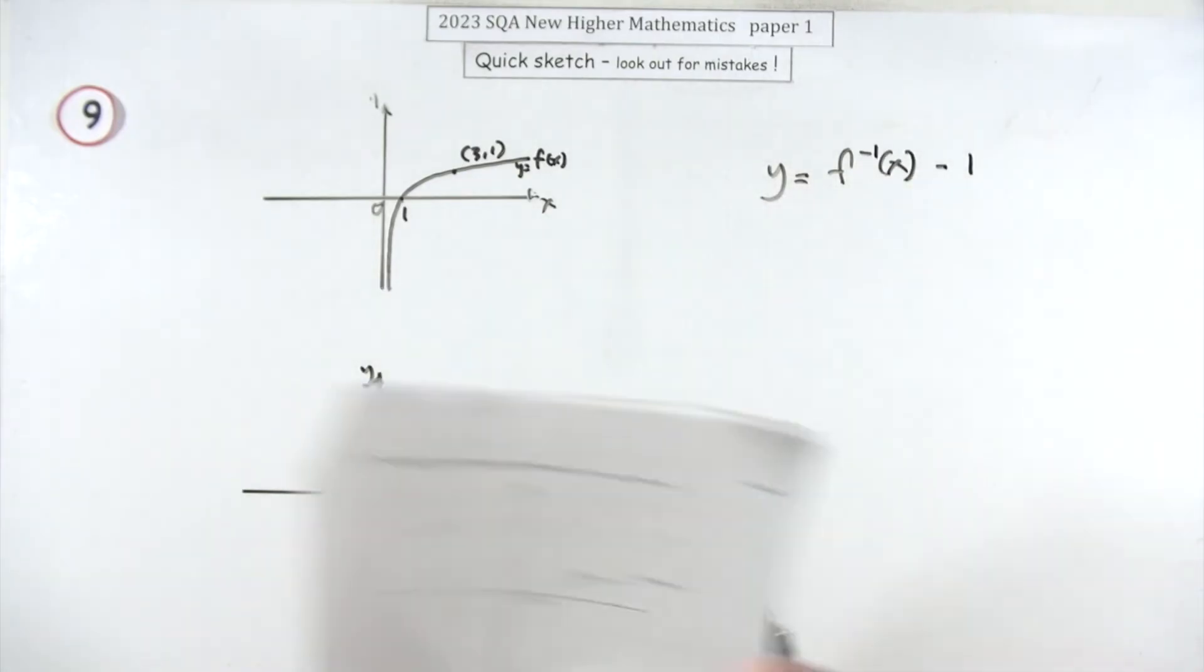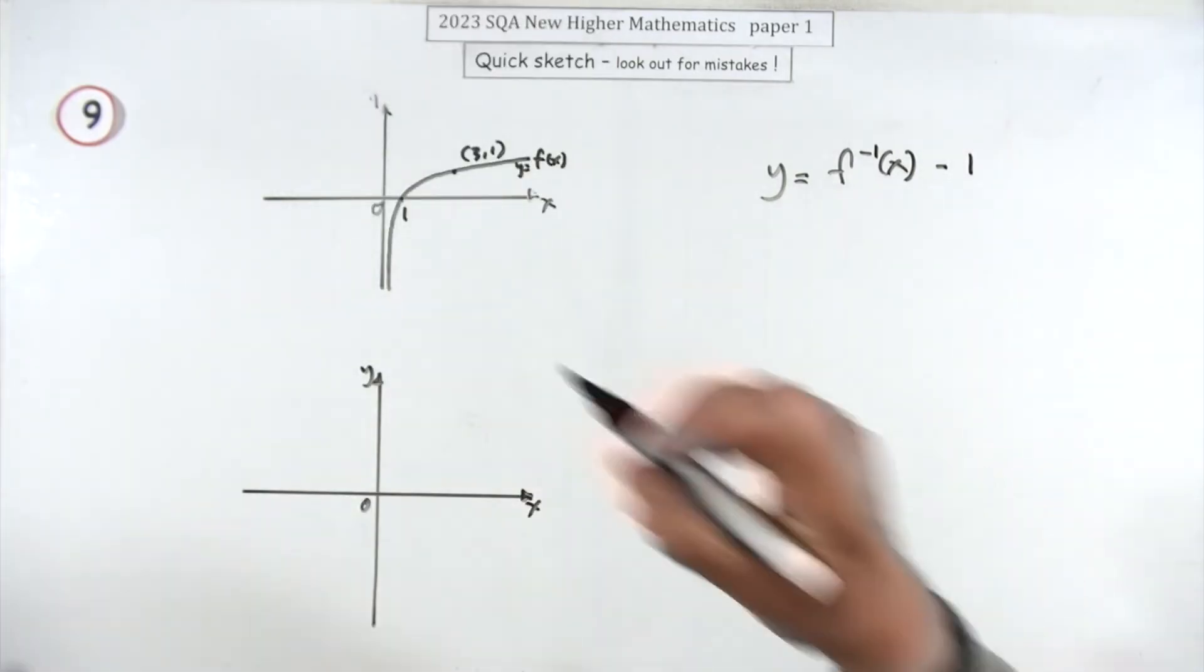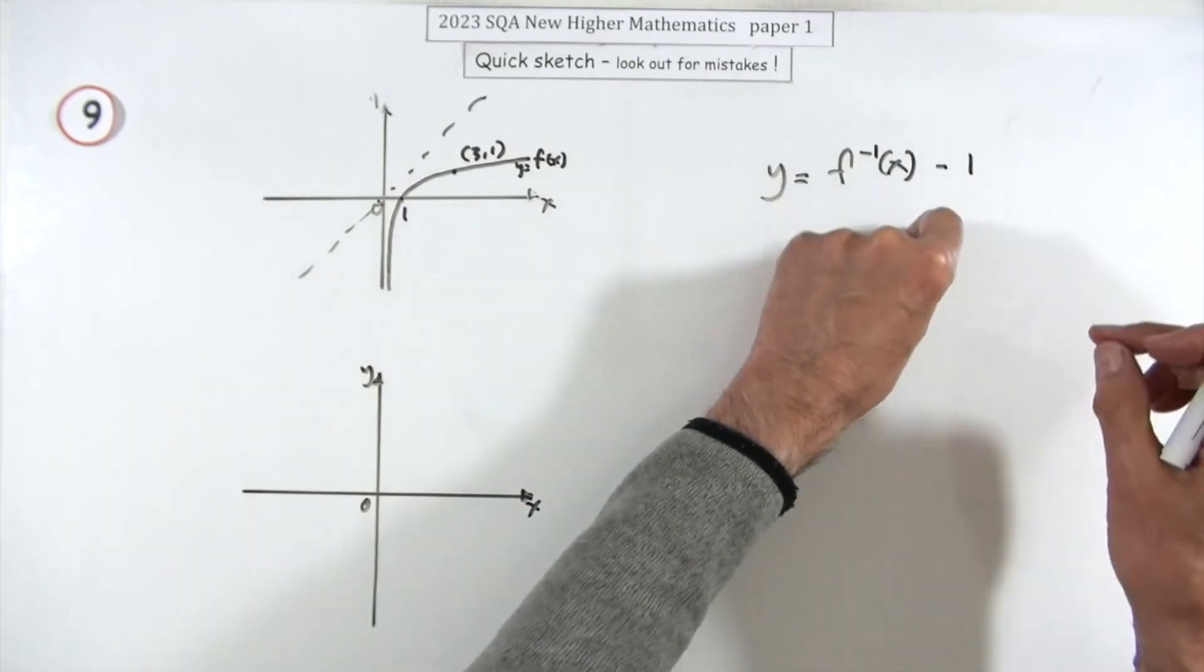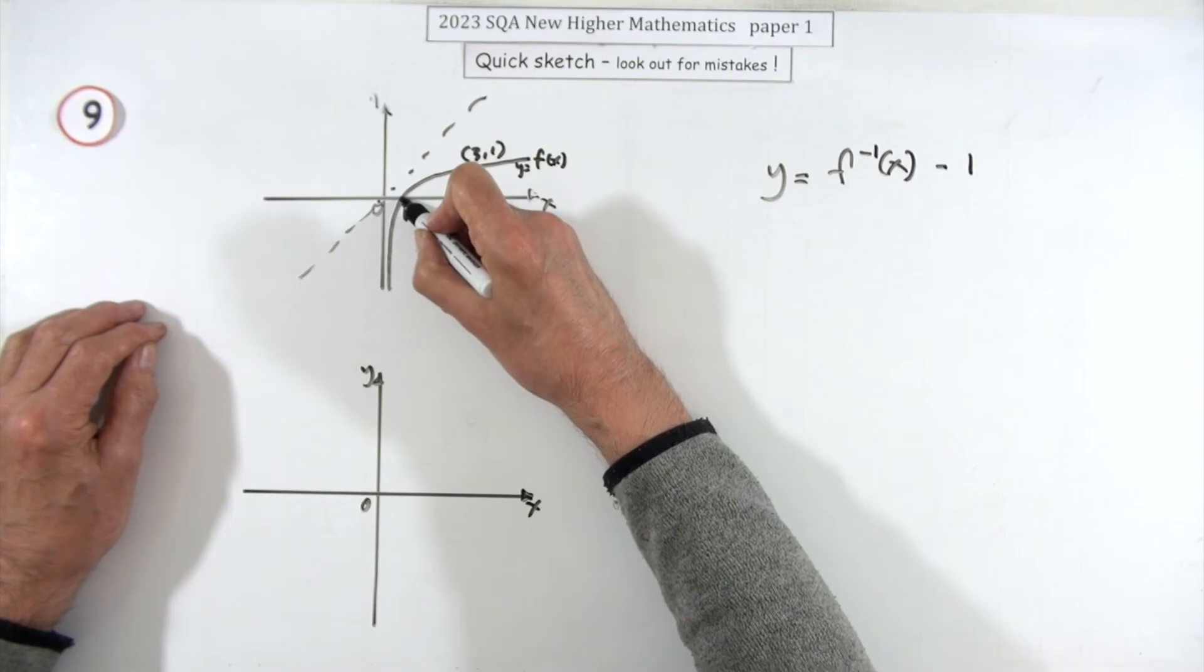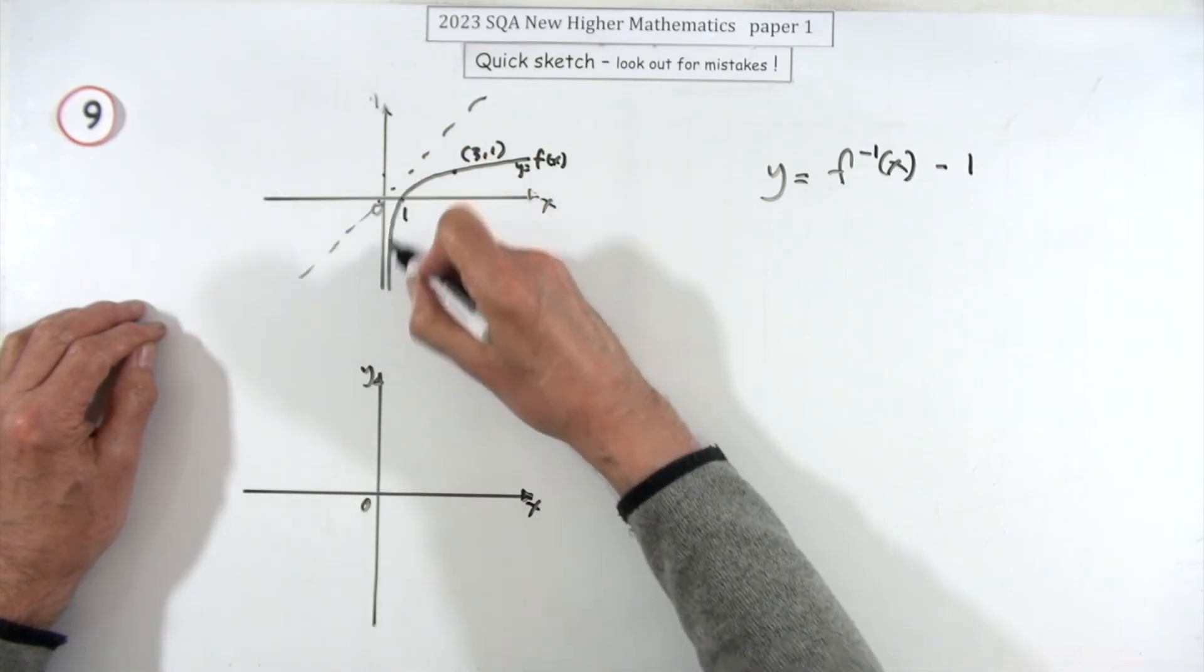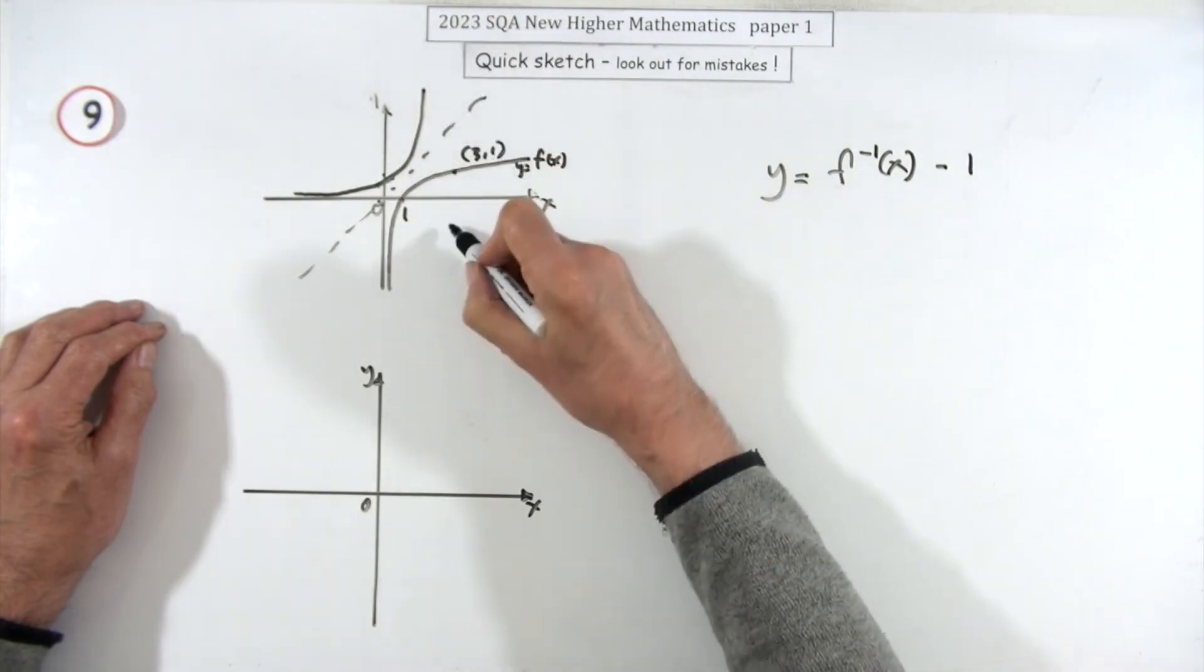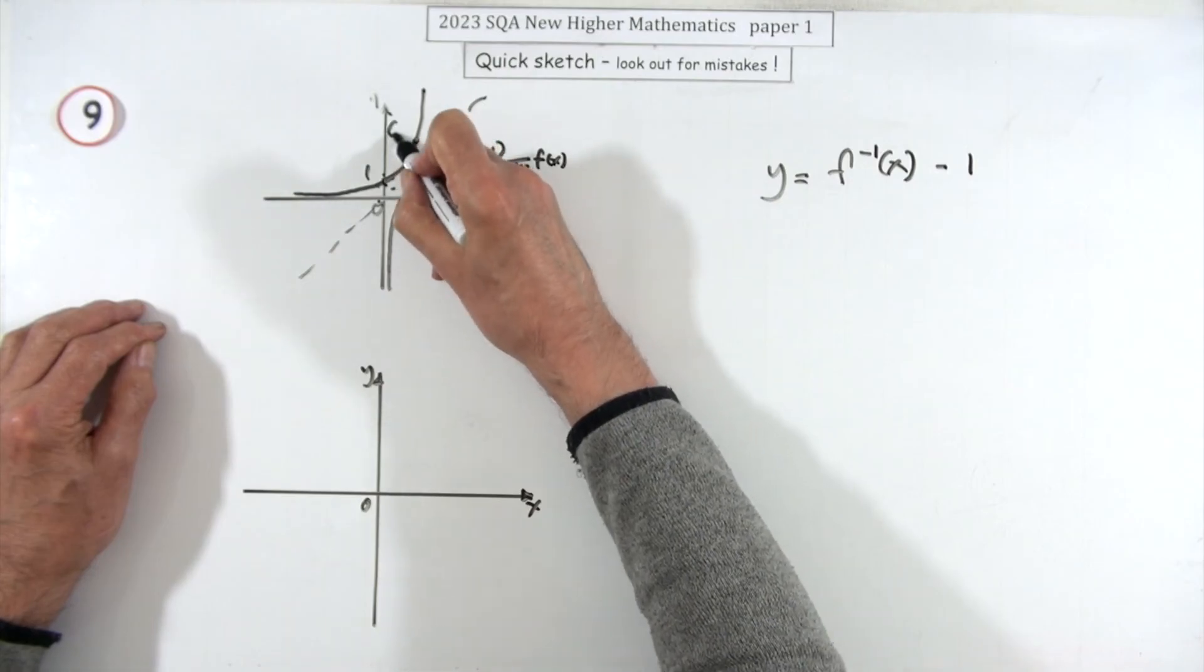That just means get the inverse function and drop it down one. You get the inverse function by reflecting it in the line y equals x, because the inverse means interchanging the x and the y's. So if I went through one there, it approaches this axis, and it bends off sharply. That would be one, and that would be the opposite - that's (1, 3).